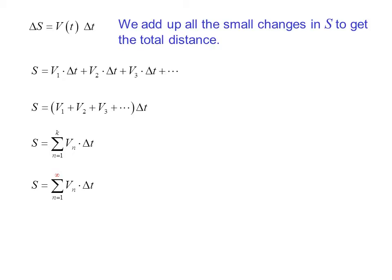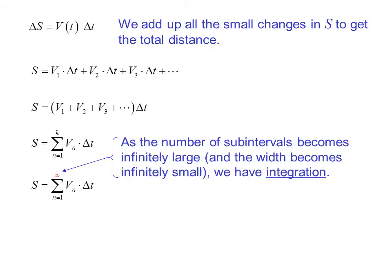If we go to infinity, we have the summation from n equals 1 to infinity of vₙ Δt. As the number of subintervals becomes infinitely large and the width becomes infinitely small, we have integration, the integral of v(t) dt.